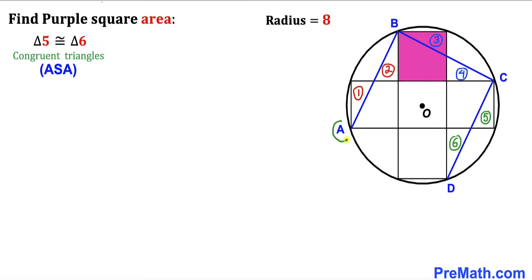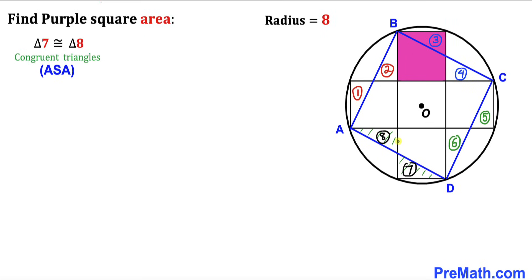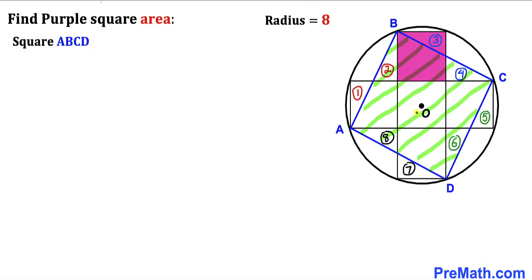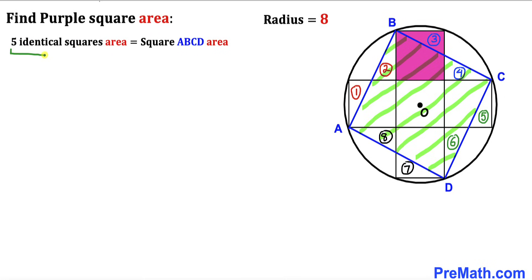Finally, we connect points A and D, and focus on the last two right triangles — triangle seven and triangle eight. We conclude these are congruent as well by the Angle-Side-Angle theorem. As a result, we have formed square A, B, C, D. Therefore, the area of all five identical squares equals the area of square ABCD, and our next task is to calculate the area of square ABCD.